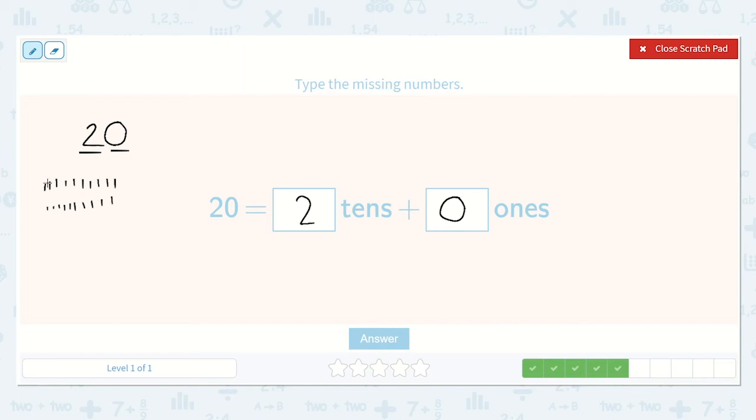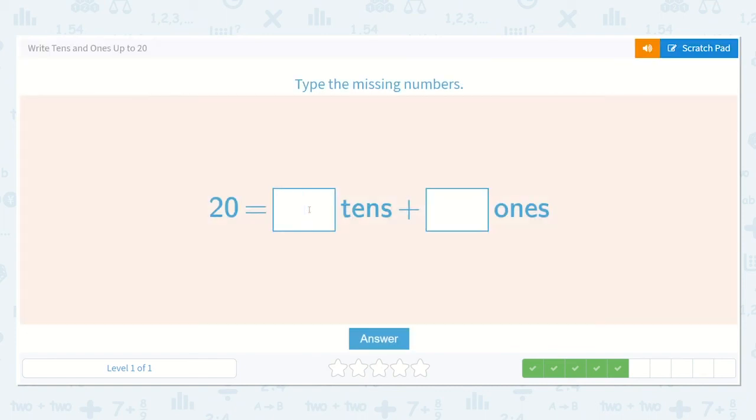I'll write 1, 2, 3, 4, 5, 6, 7, 8, 9, 10. I'm going to circle this group of 10. Let me count the next group. 1, 2, 3, 4, 5, 6, 7, 8, 9, 10. I had 2 groups of 10. 10, 20. So that is 2 tens but there is nothing left over so there are 0 ones. So 20 is 2 tens and 0 ones.